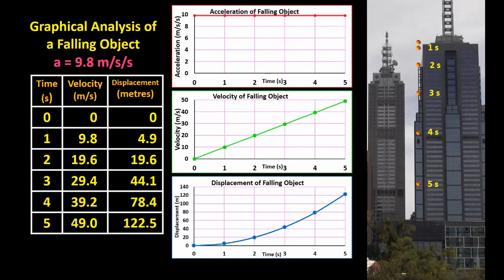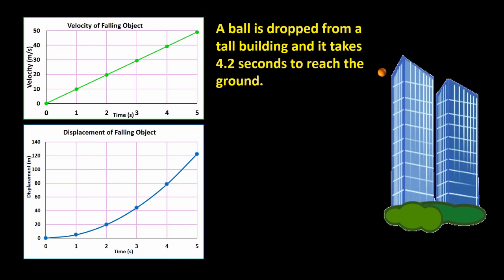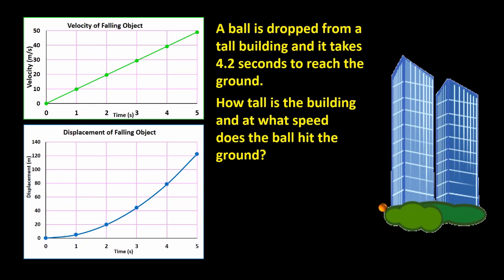We can use the graphs to work out lots of information. For example, a ball is dropped from a tall building and it takes 4.2 seconds to reach the ground. How tall is the building and at what speed does the ball hit the ground? Reading off the Vt graph...